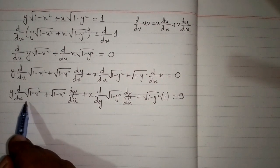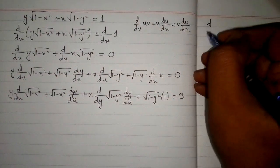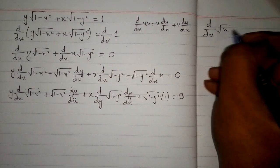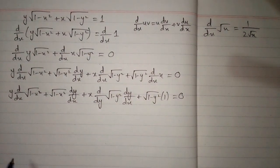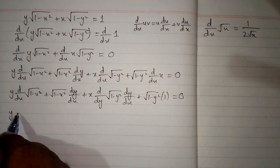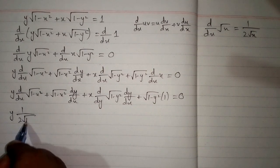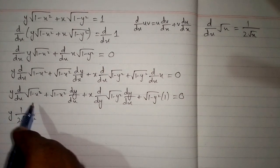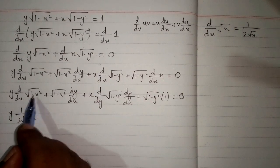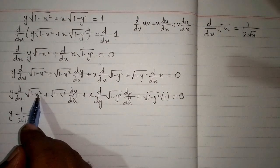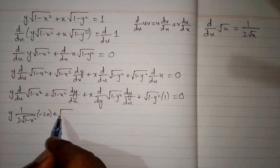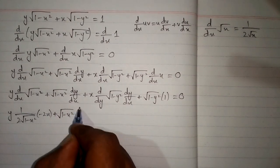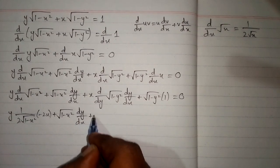Now we will apply the formula that d/dx of square root of x equals 1 over 2 times square root of x. So this becomes 1 over 2 times square root of (1 minus x squared), multiplied by the derivative of the inside. The derivative of 1 is 0 and the derivative of x squared is 2x, so we multiply by minus 2x. Then plus square root of (1 minus x squared) times dy/dx plus x.